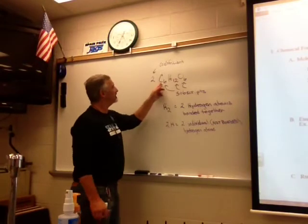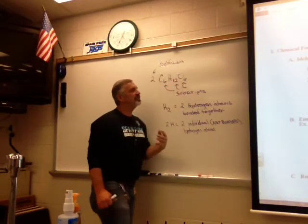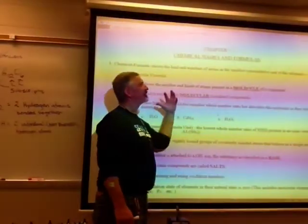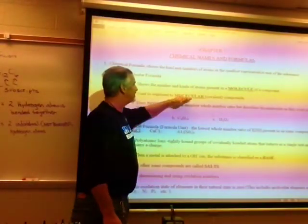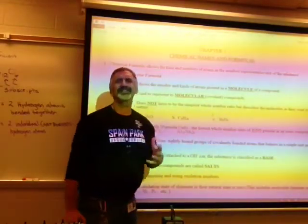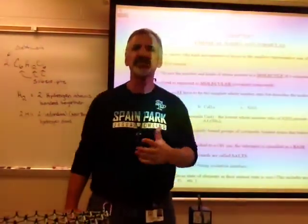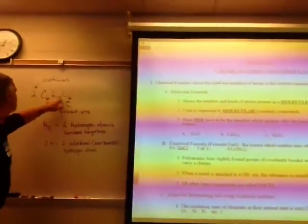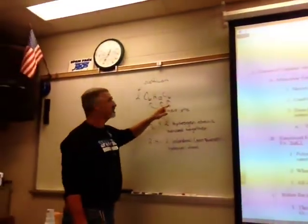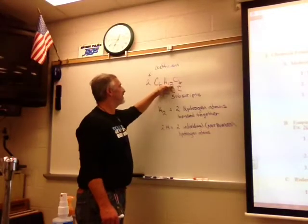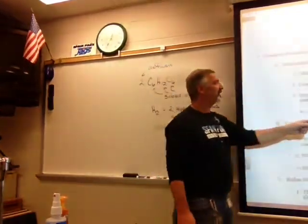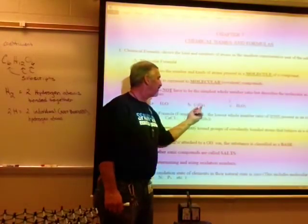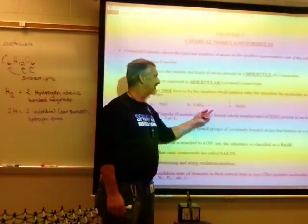In a covalent molecular substance we use a molecular formula, which tells us the exact number of atoms in the molecule. It does not have to be the simplest ratio. For instance, glucose C6H12O6 could be reduced to a 1:2:1 ratio, but the molecule exists as C6H12O6. Octane, which is gasoline, is C8H18 — not reduced, but that's the way the molecule actually exists.